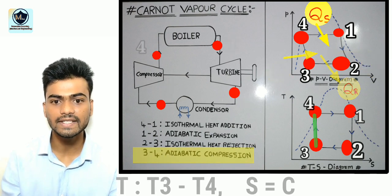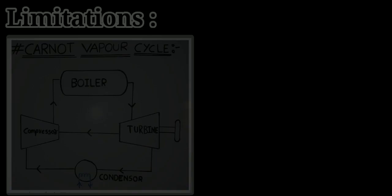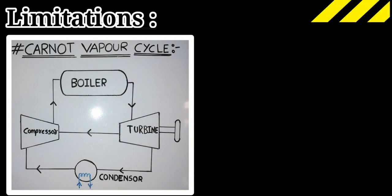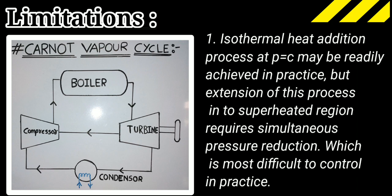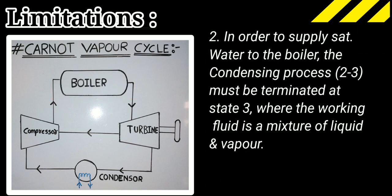Limitations of Carnot vapor cycle. In spite of its high thermal efficiency it is not practiced because of the following difficulties. First one, isothermal heat addition process at constant pressure that is 4 to 1 may be readily achieved in practice but extension of this process into a superheated region requires a reduction in pressure simultaneously which is most difficult to control in practice. Second one, in order to supply saturated water to the boiler the condensing process 2 to 3 must be terminated at state 3 where the working fluid is a mixture of liquid and vapor. It is impossible in practice to terminate or stop the condensation process exactly at state 3.